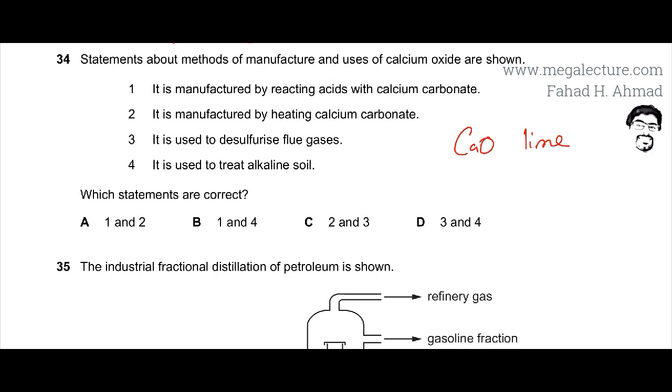Next one is it is manufactured by heating calcium carbonate, which is correct because you take limestone and you decompose it. You heat it, it decomposes and ends up producing a metal oxide and carbon dioxide that results in the formation of lime. So limestone is used, it is heated. So this statement, option two, is correct.